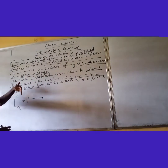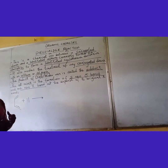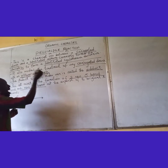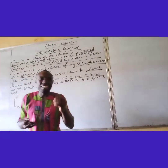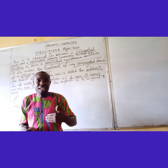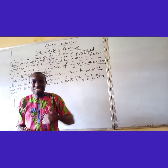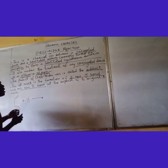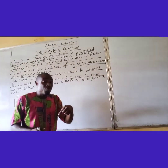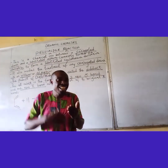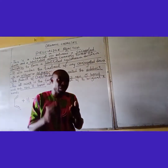The Diels-Alder reaction involves the treatment of any conjugated diene with an alkyne or an alkene. The alkyne and the alkene are acting as the dienophile in this case. From the word dienophile, it means the diene's lover — the lover of the diene. The product that is obtained is called an adduct, and that adduct is in the form of a substituted cyclohexene derivative.